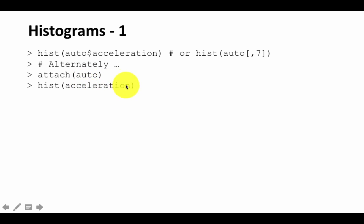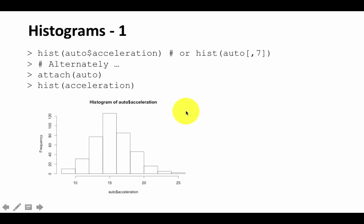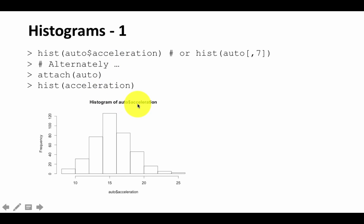R looks and sees it doesn't have any variable called acceleration, so it goes inside the auto data frame and finds it there. It then plots it for us. The result is that the plot title will say 'histogram of acceleration' rather than 'auto$acceleration', because we used the attached version.